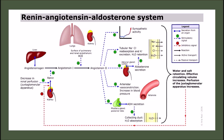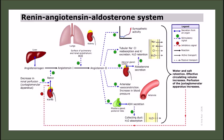Before learning about ACE inhibitors, it's really important to understand the renin-angiotensin-aldosterone system, known as RAS, very well. If you know how this physiological system works, it's easy to understand how ACE inhibitors work. When blood pressure drops, or the concentration of sodium in the distal convoluted tubules in the kidney falls, a specialized apparatus is activated.